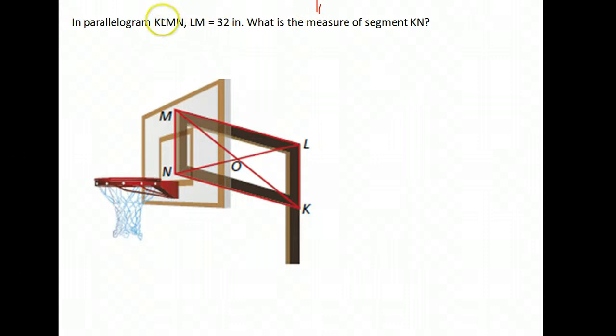here we have a question. It says in parallelogram KLMN, LM is 32. So let's first, they did trace over it for us. Okay. But notice it's this parallelogram on the back of the backboard. LM is 32. Where is LM? Here it is. It's the top of our parallelogram from L to M. What is the measure of KN?